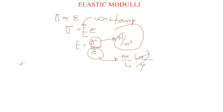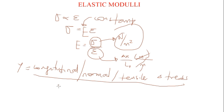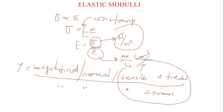As a result, Young's modulus with symbol Y is given as the longitudinal, normal, or tensile stress over the longitudinal, normal, or tensile strain — since it is the ratio of stress to strain. You can use tensile stress over tensile strain, normal stress over normal strain, or longitudinal stress over longitudinal strain — they all refer to the same thing.